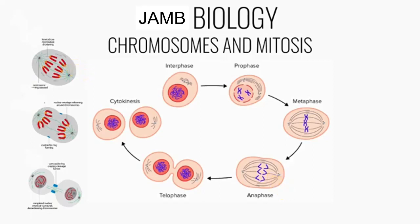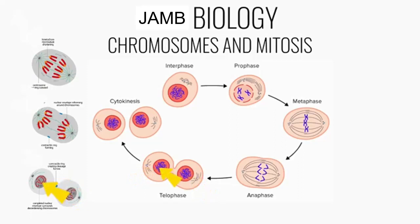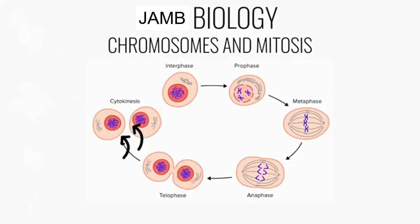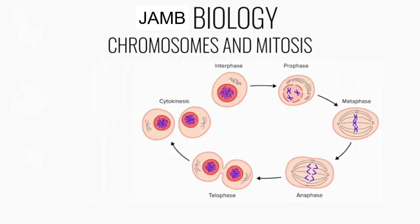At this point, the nuclear envelope starts to reappear, separating the two nuclei. The chromosomes also start to decondense, and a cleavage furrow is also formed. Finally, the cells separate, forming two identical daughter cells.